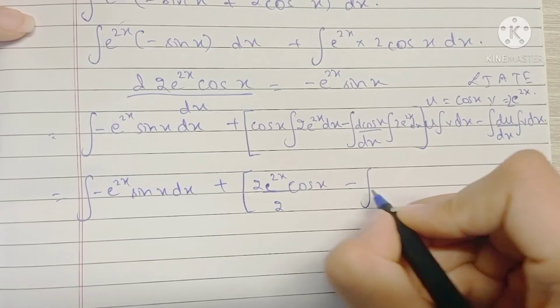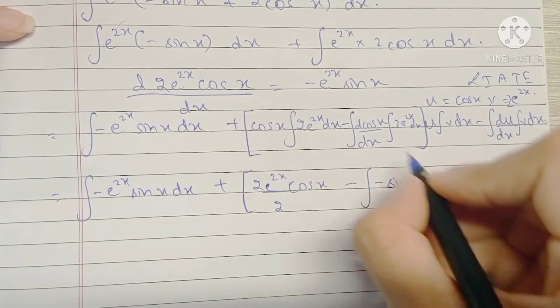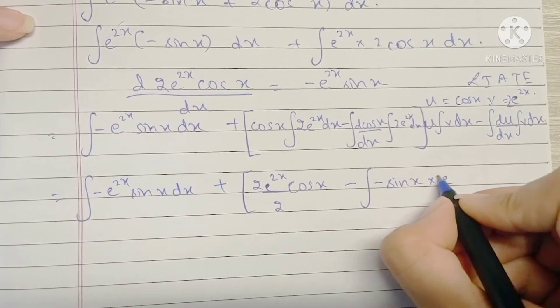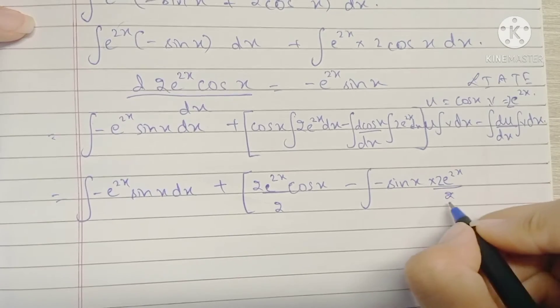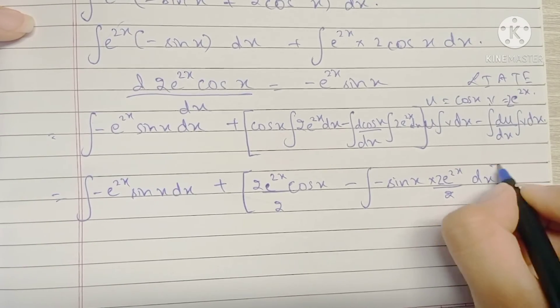The differentiation of cos x is minus sin x, integration of 2 e raised to 2x is 2 e raised to 2x upon the coefficient of x in the power which is 2.